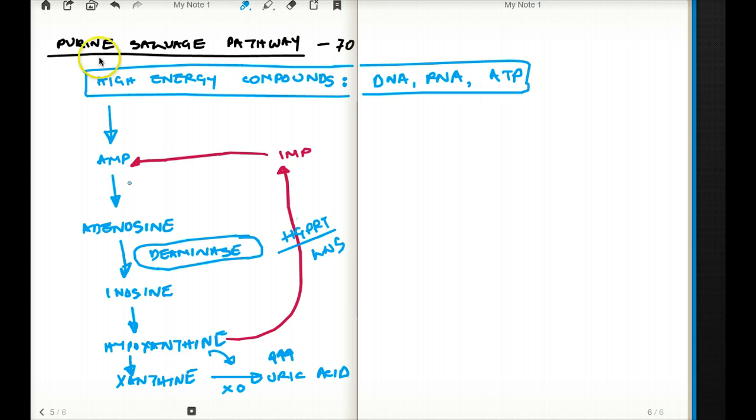So this is one thing. The other thing that I want to mention here is that from our high energy compounds, we also get something called GMP, obviously, the other purine. From GMP, we get guanosine. And from guanosine, we get guanine.